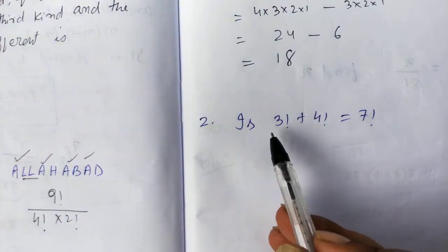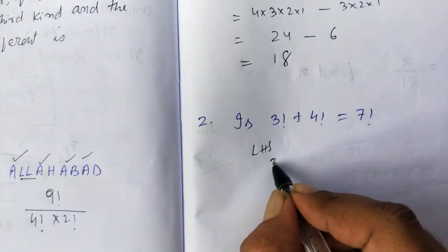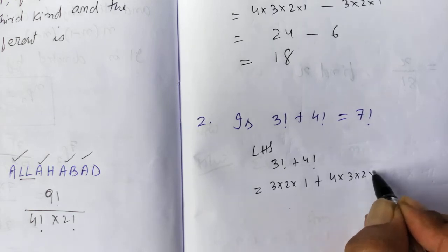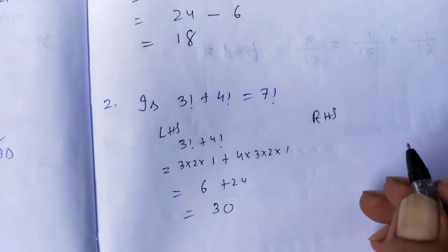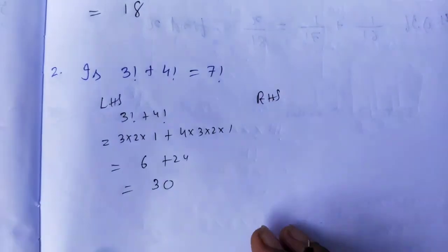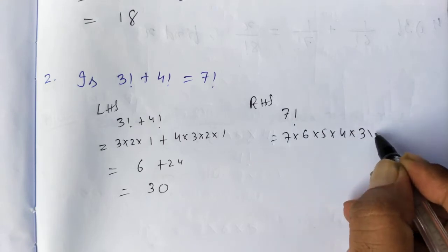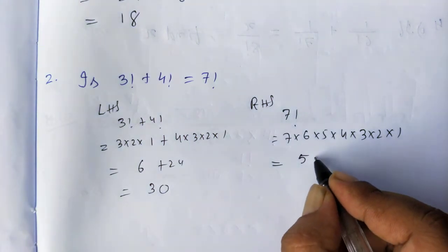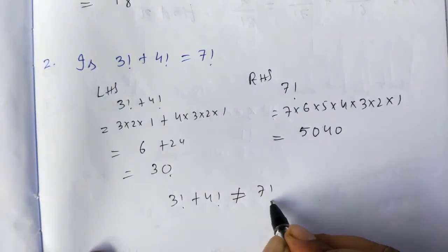Question 2: Check if 3! + 4! = 7!. LHS: 3! + 4! = 6 + 24 = 30. RHS: 7! = 7 × 6 × 5 × 4 × 3 × 2 × 1 = 5040. Since 30 ≠ 5040, we conclude that 3! + 4! is never equal to 7!.